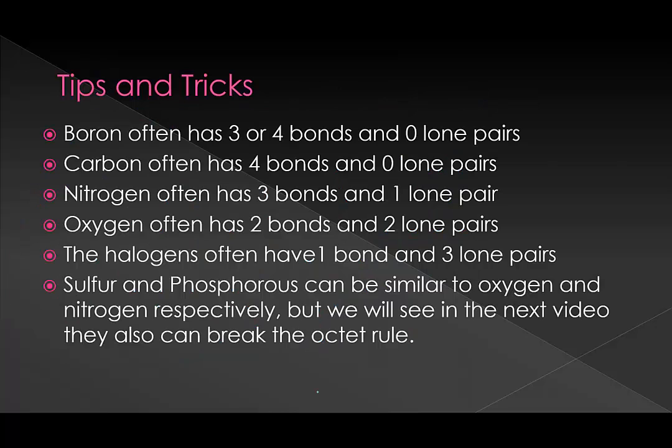So just our quick tips and tricks. These are actually just ways of minimizing formal charge, but I want to point out again. Remember that our carbon generally has 4 bonds and 0 lone pairs, which will give you a formal charge of 0 and an octet. Nitrogen generally has 3 bonds and 1 lone pair, and oxygen generally has 2 bonds and 2 lone pairs. So if you keep these 3 in mind for your organic structures, you're going to find that they're a lot easier to do.